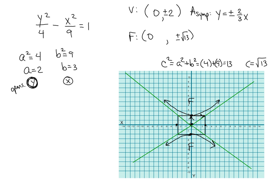Notice that all we did was switch which variable was with four and which was with nine. We got the same guide box and the same asymptotes — the only difference is which way the hyperbola opened, where the vertices were, and where the foci were. Any questions? I would use graph paper for these problems.